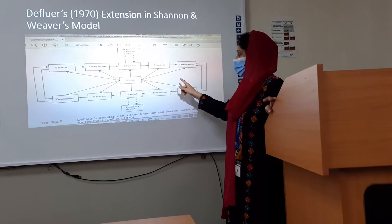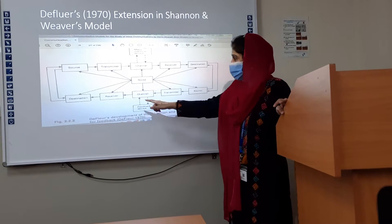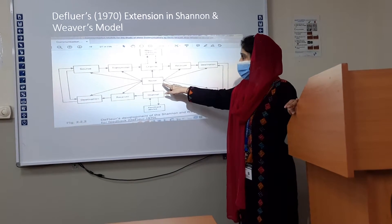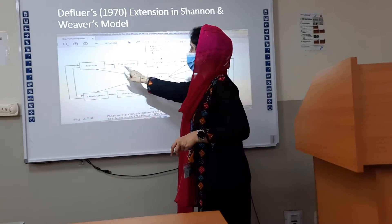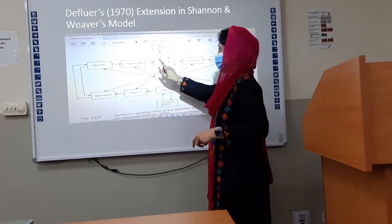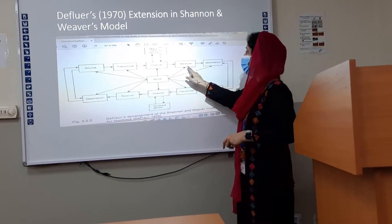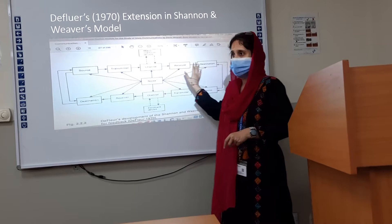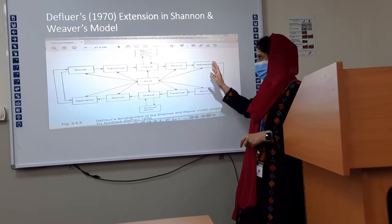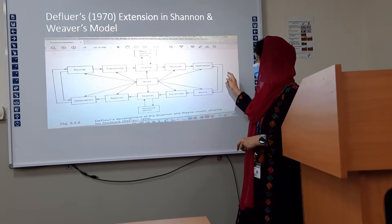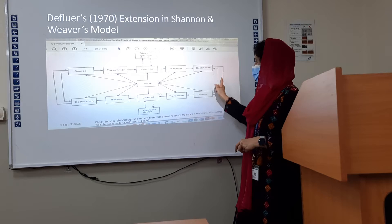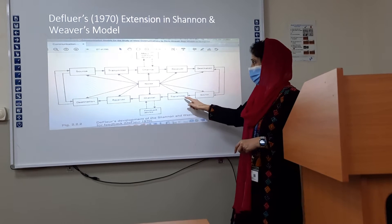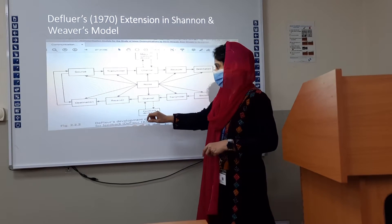Biflow developed it in a way that it has this feedback element. Noise is there. He says that from source it goes to transmitters, then channels, then receiver, then destination. This is Shannon and Weaver's model going in one direction — linear. And then he says that the same destination can also be a source, going back through transmitter, channel, receiver, destination.